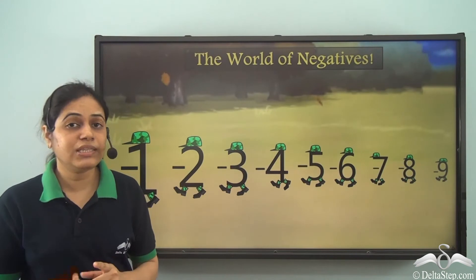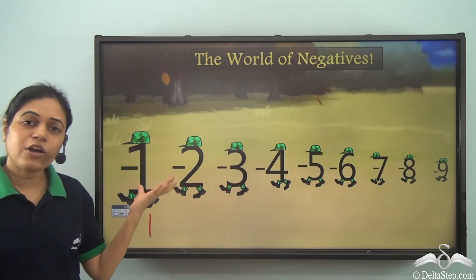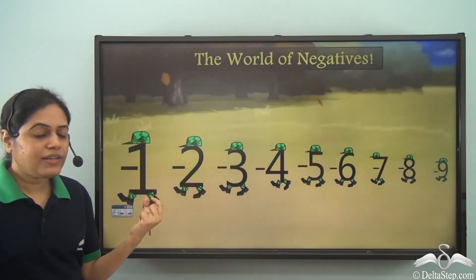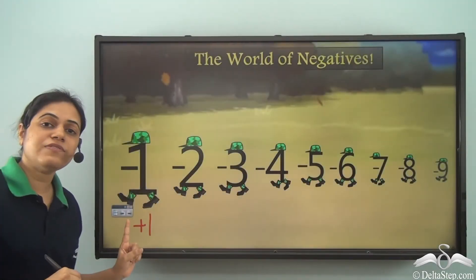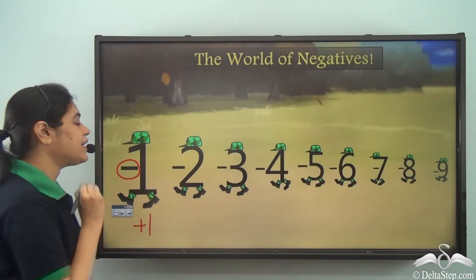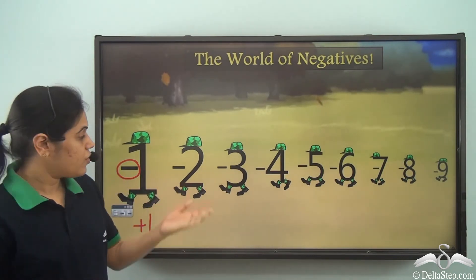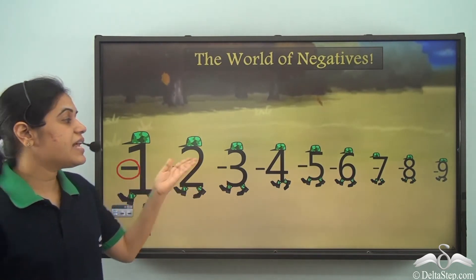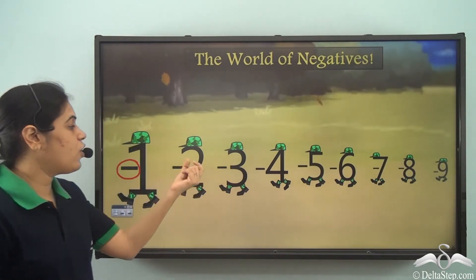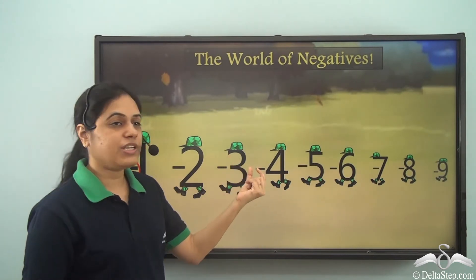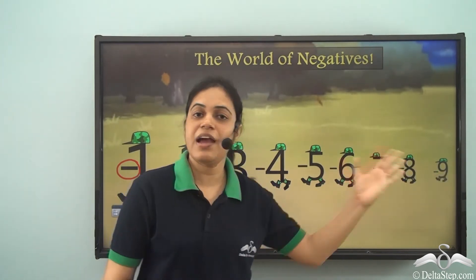Now how do I read these numbers? Can I call this number one? If I call it one it would mean positive one, but this one has a negative sign. So what do I call it? I call it negative one. The next one I call negative two — I don't give long names like 'two with a negative sign.' I call it negative two, negative three, negative four, negative five, negative six, negative seven, and so on.